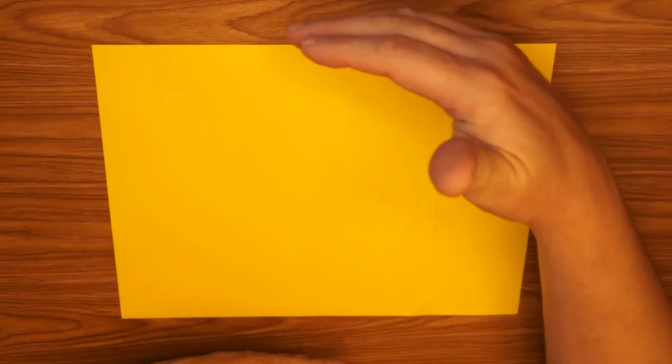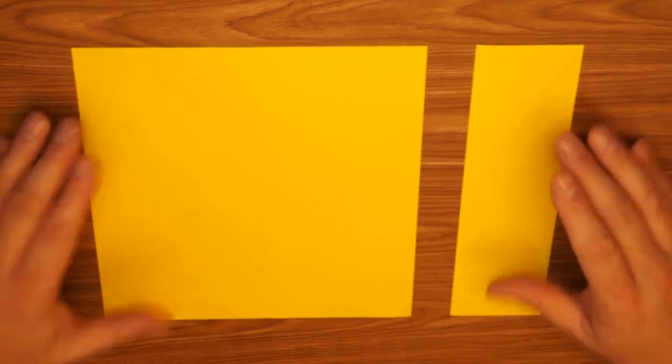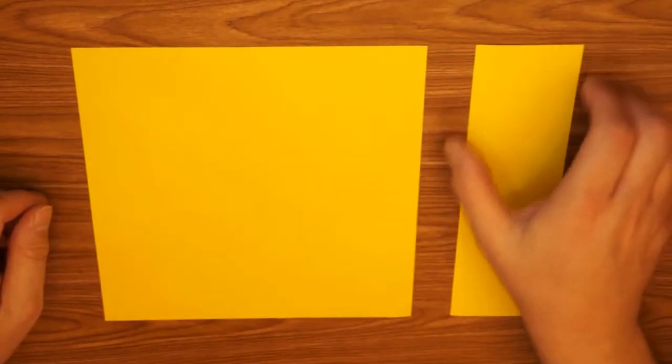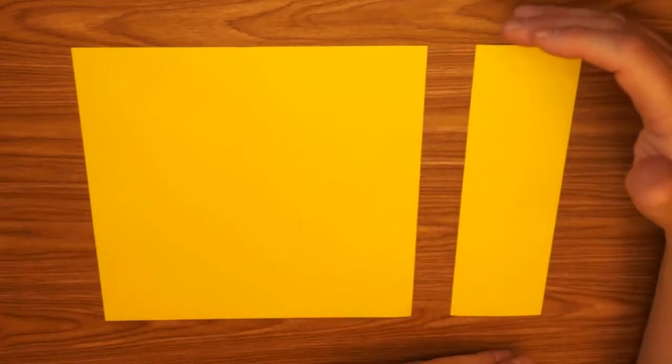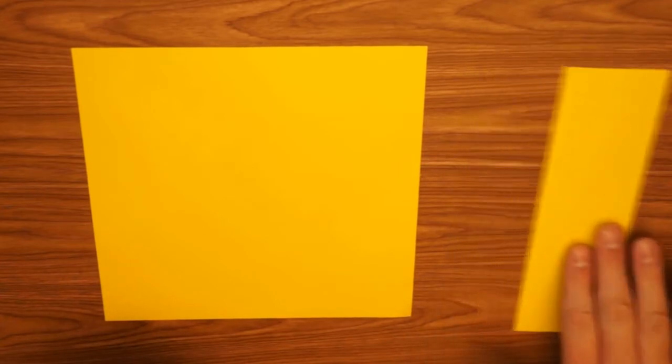For this project, we start with an 8½ inch by 11 inch piece of paper. Cut it into a square, 8½ inch by 8½ inch. And that gives you a strip, 2 inches by 8½ inches. Keep this strip. We'll be using it later in the project.